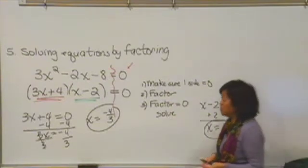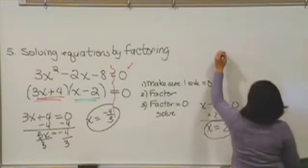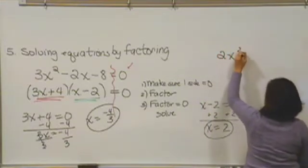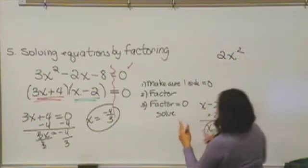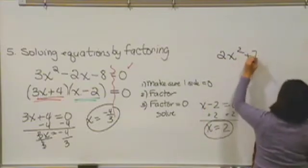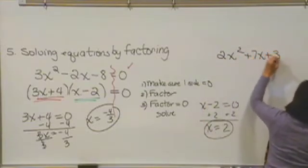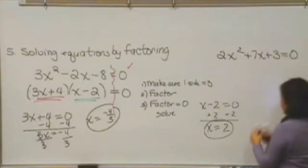So here's one for you to try. See if you can solve 2x squared plus 7x plus 3 equals zero. Give that a try.